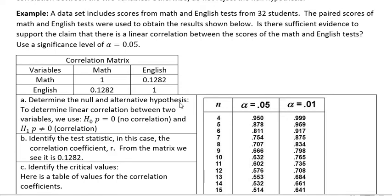Determine the null and alternative hypothesis. As I stated before, we're always going to use ρ = 0 for null and ρ ≠ 0 for the alternative. Identify the test statistic, which in this case is the correlation coefficient r, and we can just get that from the matrix: 0.1282.